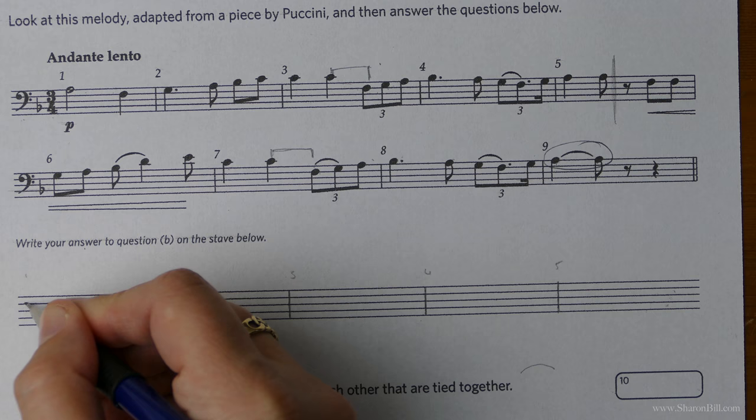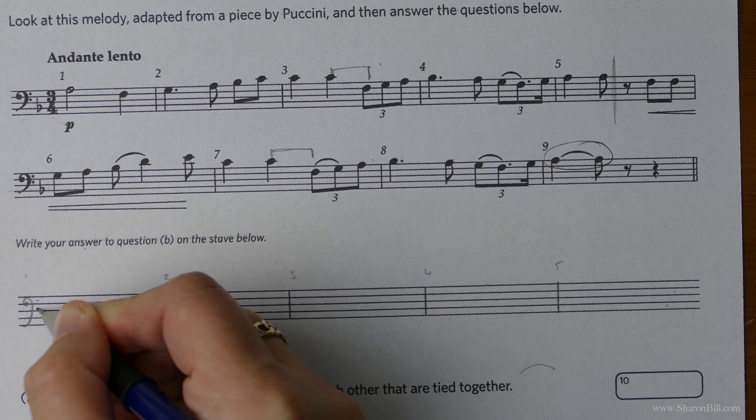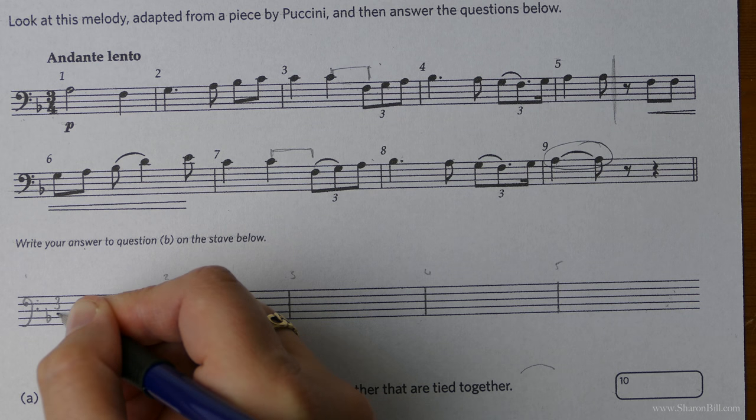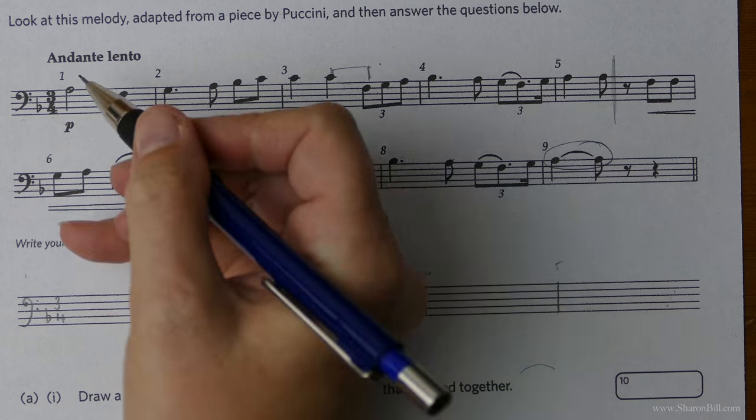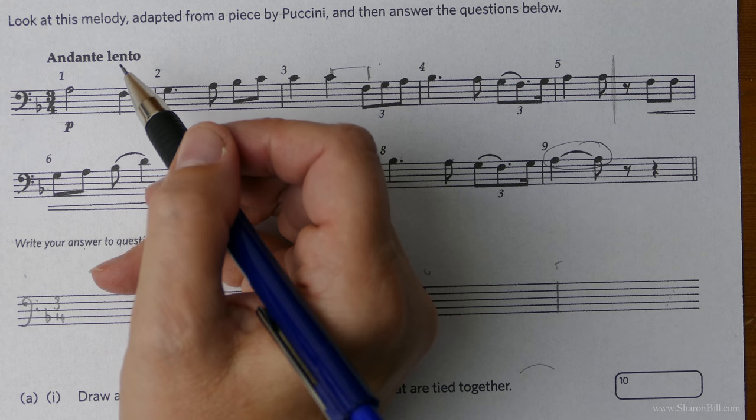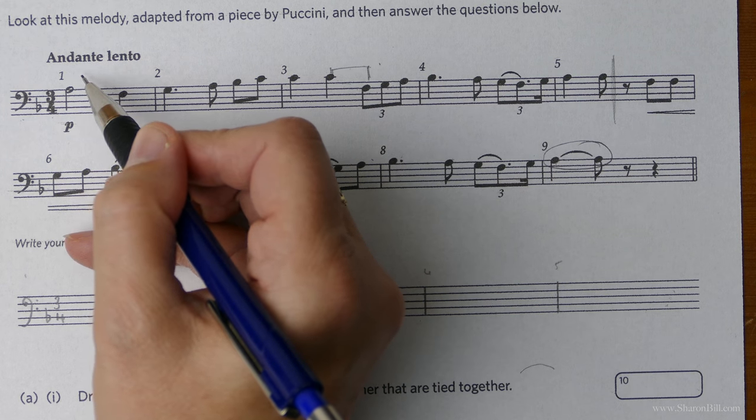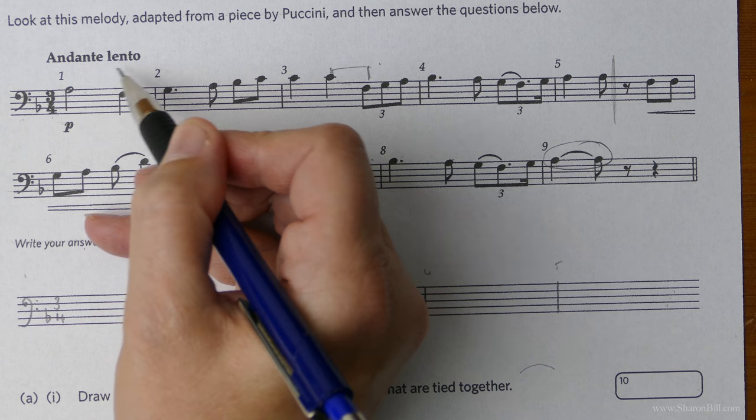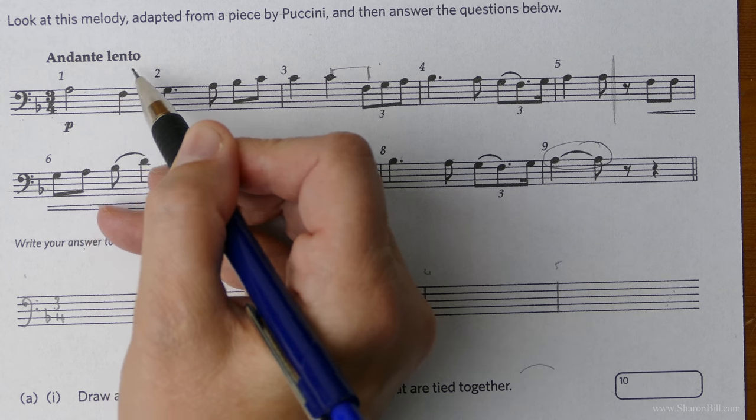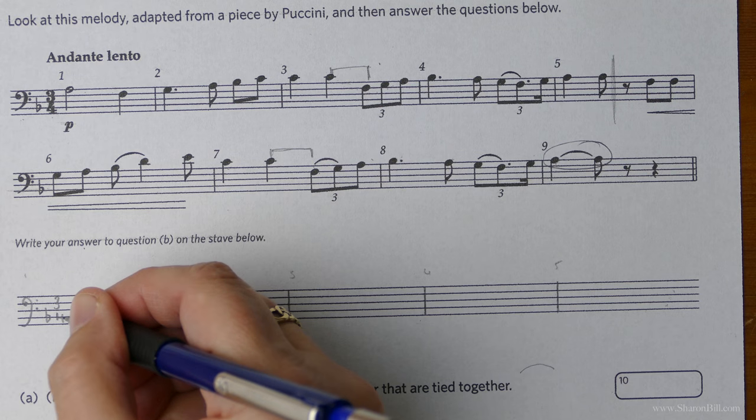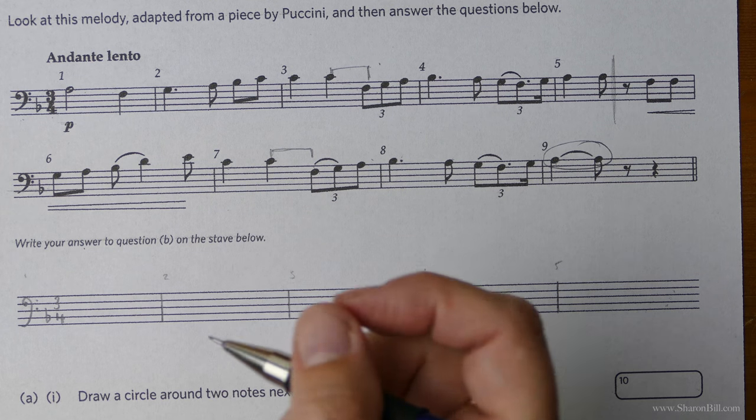So we need the clef, the key signature, the time signature, the tempo marking. So let's do a bit of revision here. Andante means at a walking pace. Lento is slow. So I suppose you would combine that to say at a slow walking pace. Let's just make use of all of the opportunities available to us for a bit of revision.